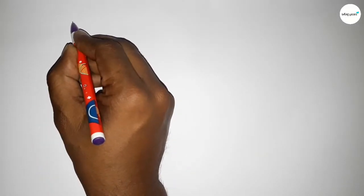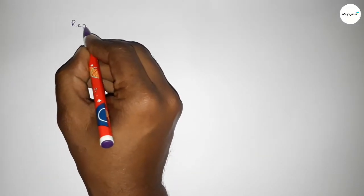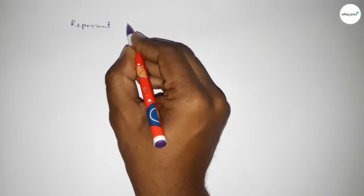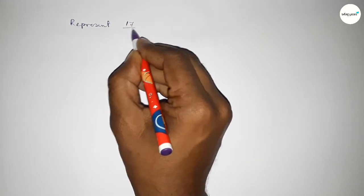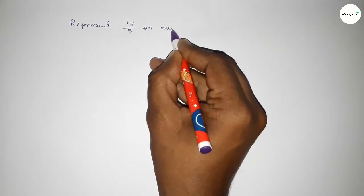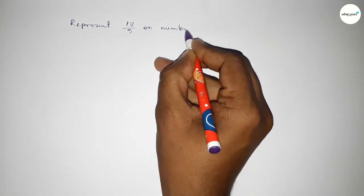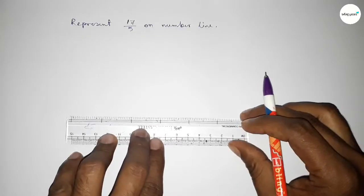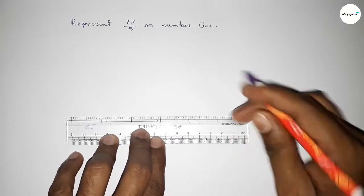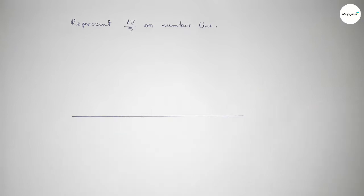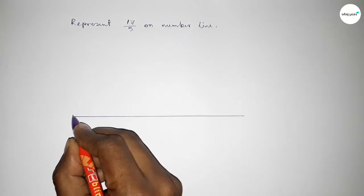Hi everyone, welcome to Essay Share Classes. Today in this video we have to represent 17 over 5 on a number line. So let's start the video. First of all, we have to draw the number line.